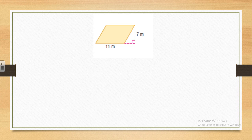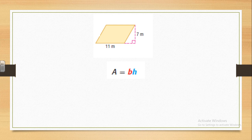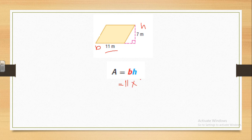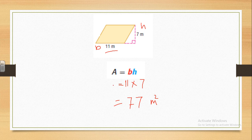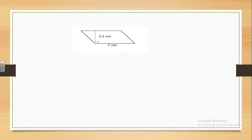Let's see the next one. First, let's write the rule: area of parallelogram equals base times height. Where is the base here — is it 11 or 7? The base will be 11 and the height is 7. So the area here will equal 11 times 7. 1 times 7 equals 7, so the area equals 77 square meters.